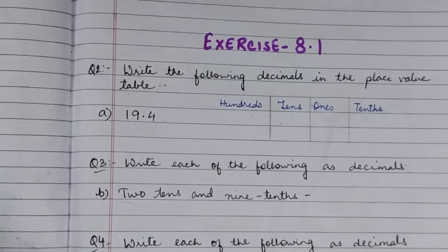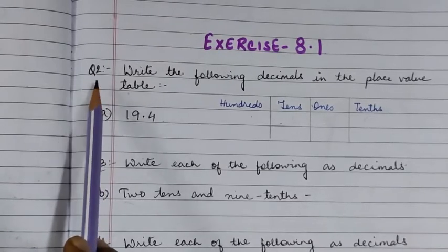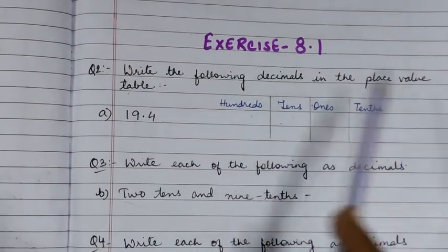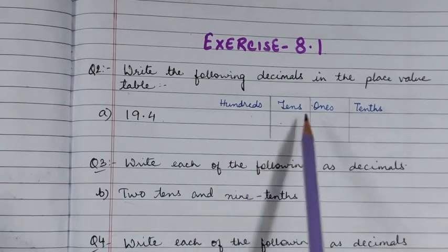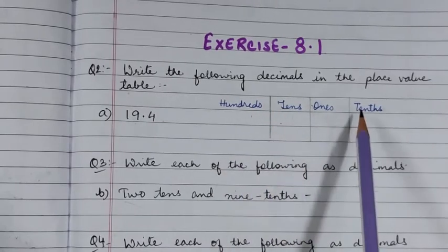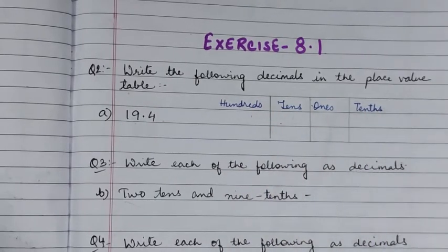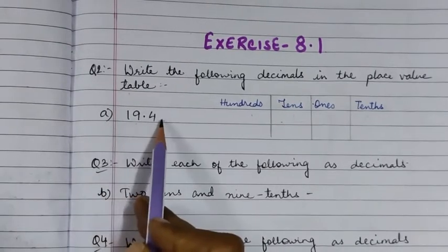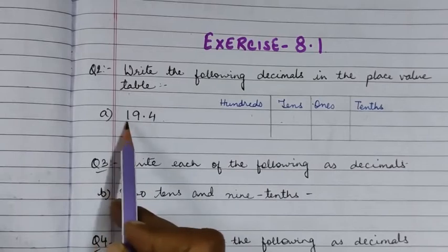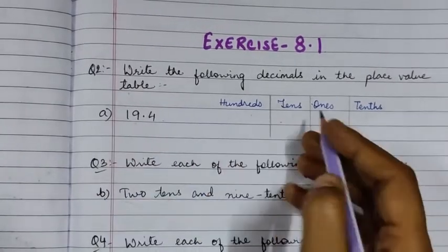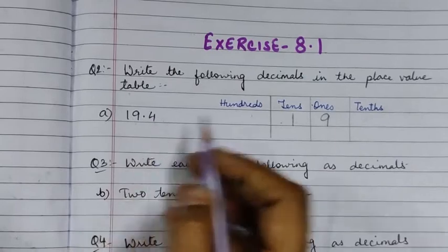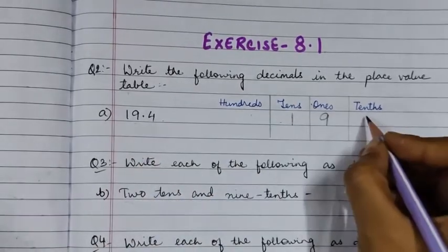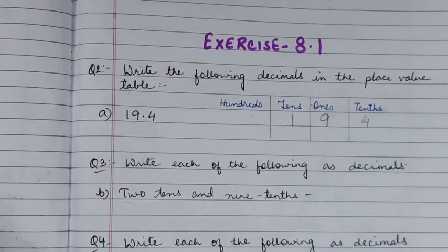In Exercise 8.1 we are starting with Question 2, which says: write the following decimals in the place value table. First we draw the place value chart with ones, tens, hundreds on the left and tenths, hundredths on the right. For number (a), 19.4 — we write 1 under tens and 9 under ones. Since we have .4, we write 4 in the tenths column.